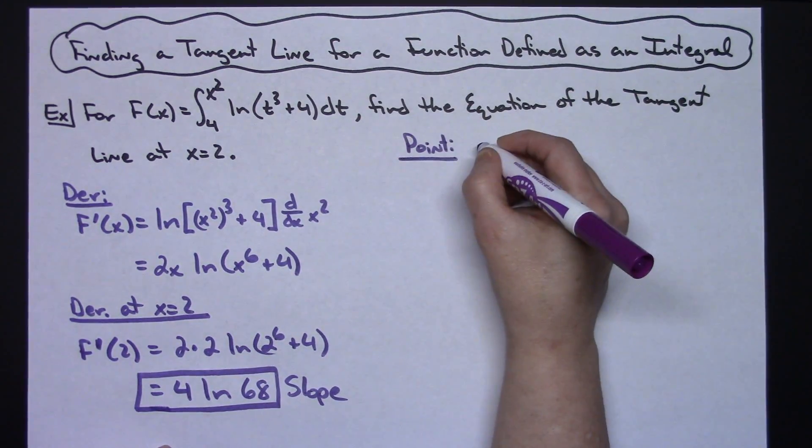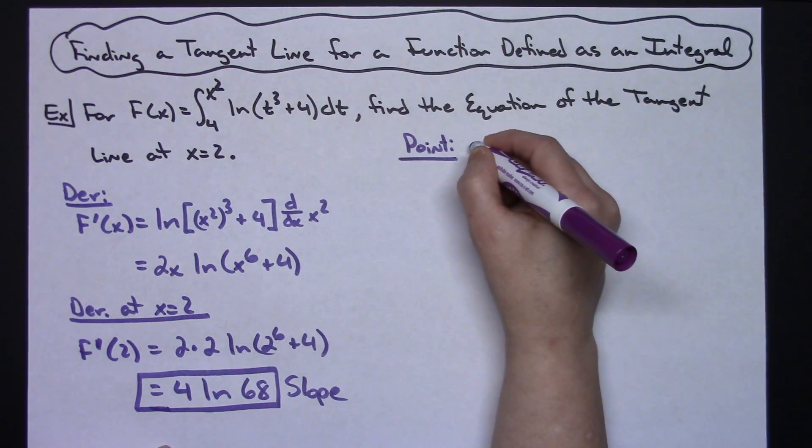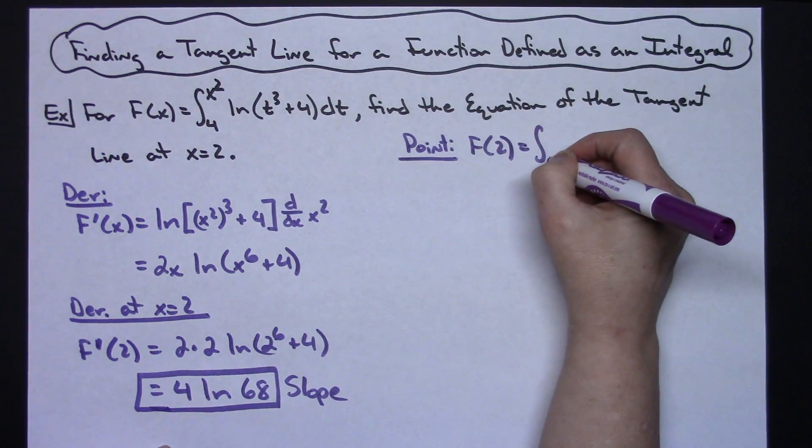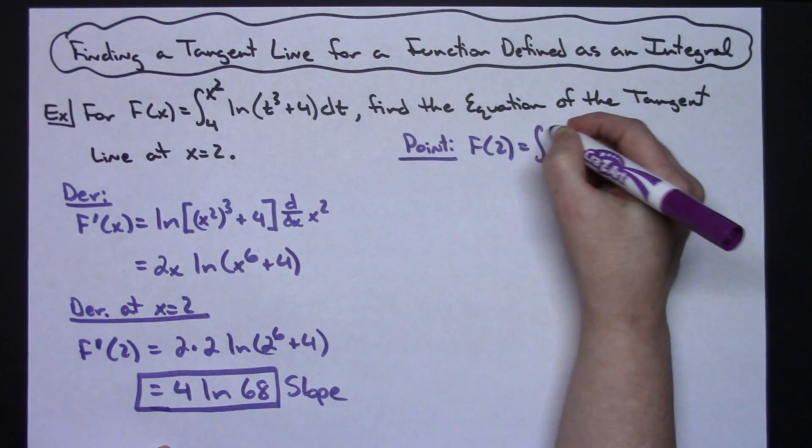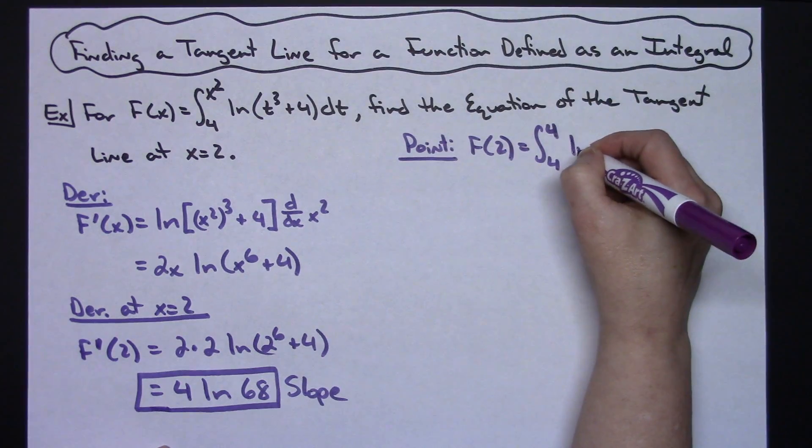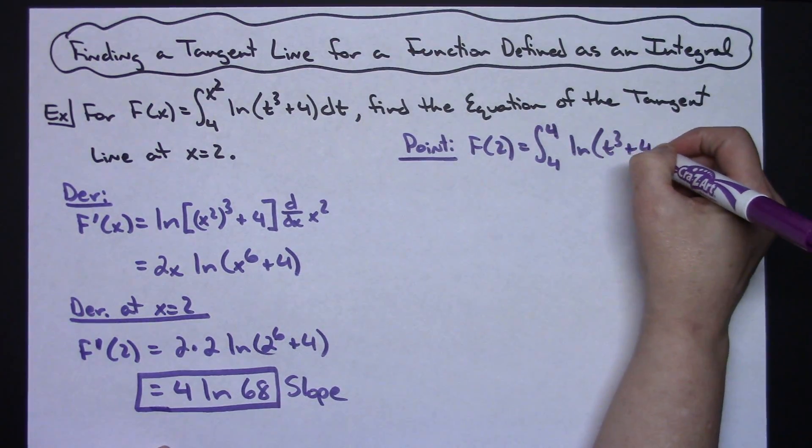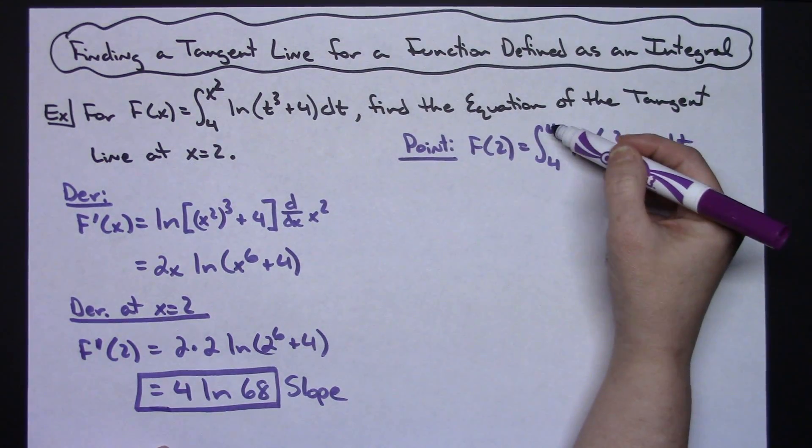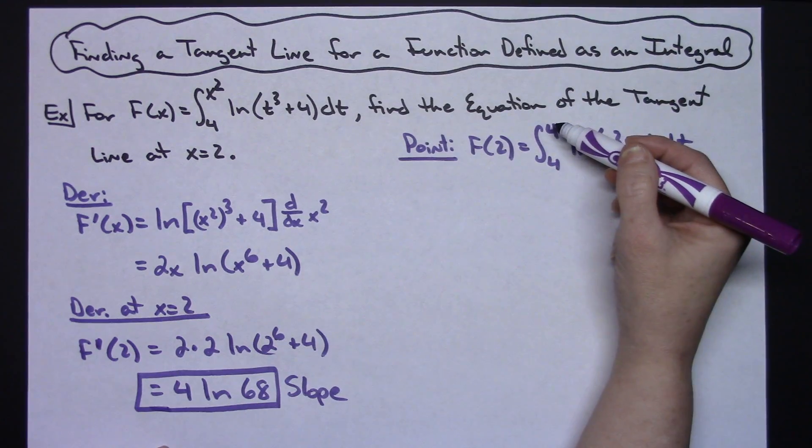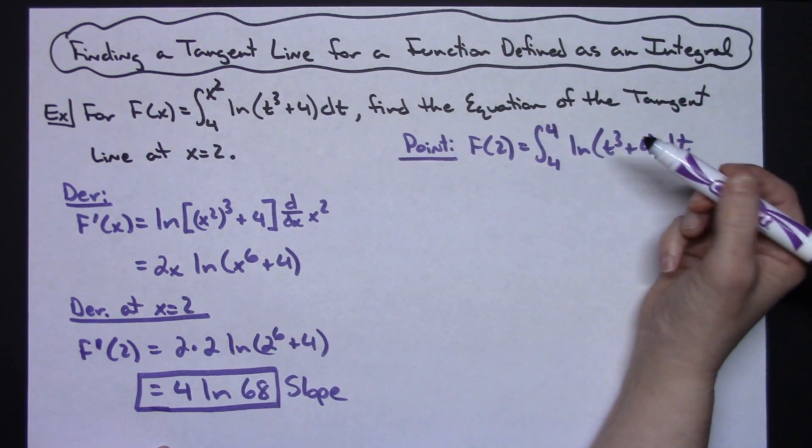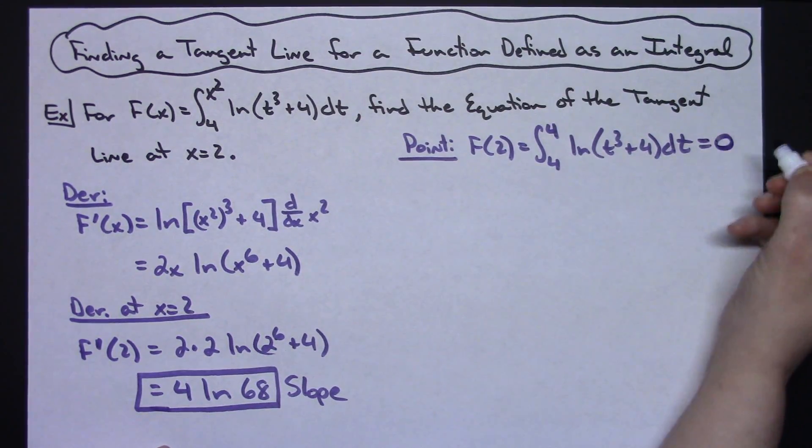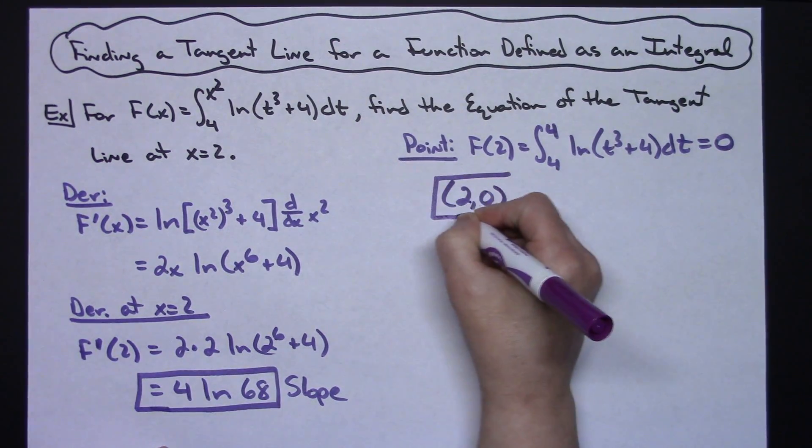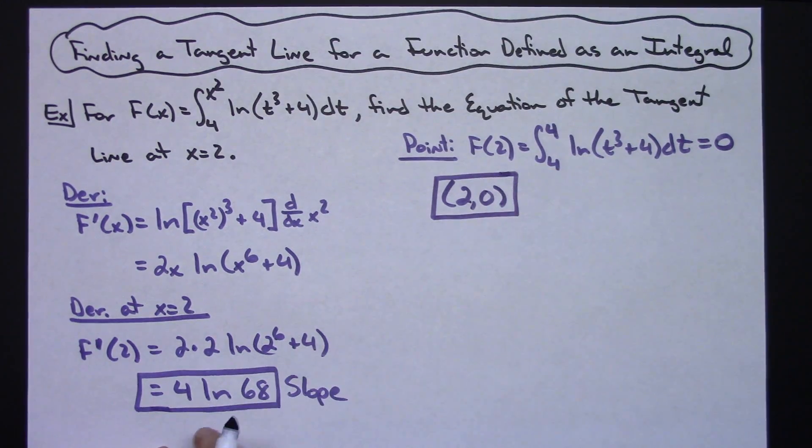I'm plugging 2 into the function, so f of 2 is going to be equal to the integral from 4 to, if I square 2, that's going to give me 4, of the natural log of t to the third plus 4 dt. Now I can evaluate this integral really quickly just taking a look at those limits: since the upper limit equals the lower limit, then I know that this is 0, which gives my point as (2, 0).